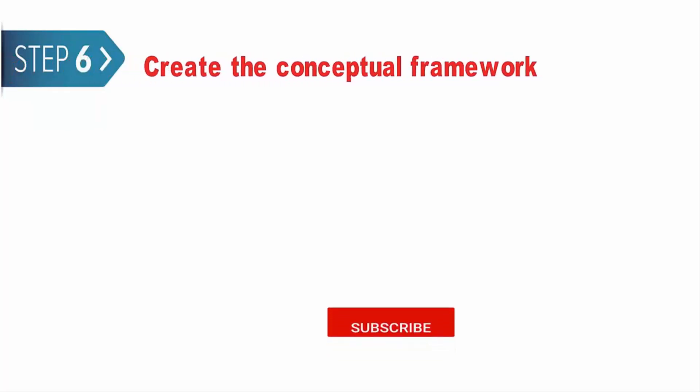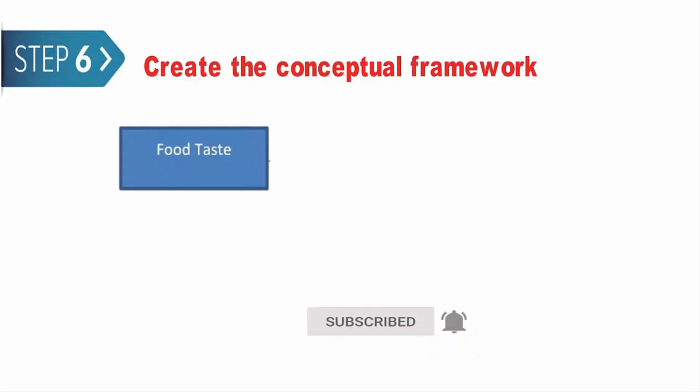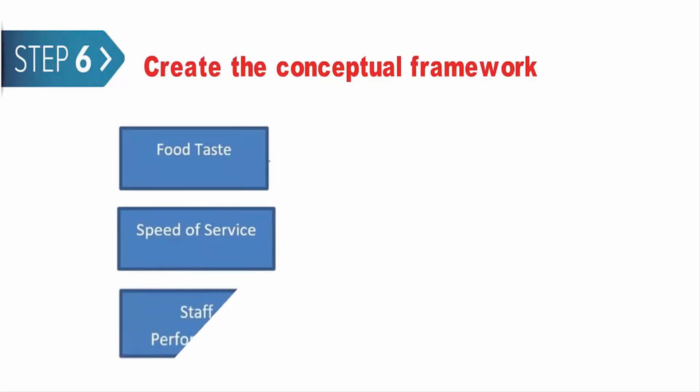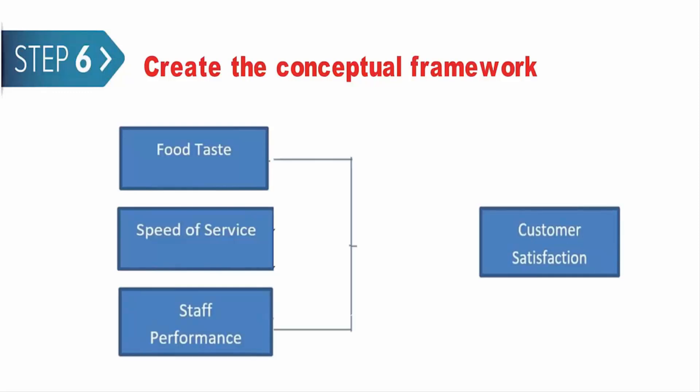Step 6: Create the conceptual framework. The final step is to illustrate the diagram. How you demonstrate the diagram will differ on a case-to-case basis. Still, generally, variable names have to be laid out clearly and put into rectangles. Variables have to be connected with lines and arrows, and the arrowheads will differ depending on the nature of the relationships. Single-head arrows are for one-directional relationships.